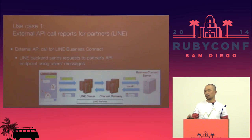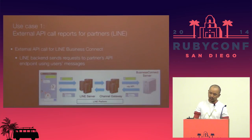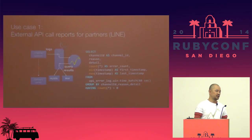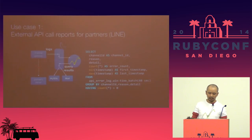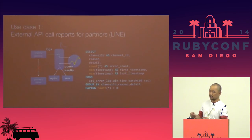We bring that response to our users in our application LINE. But if our partner's server goes down, and all our error messages flood to our partners, that is really problematic flooding. To avoid the flooding of error logs or error messages, we are now summarizing these error logs and error messages using this SQL in Norikra.